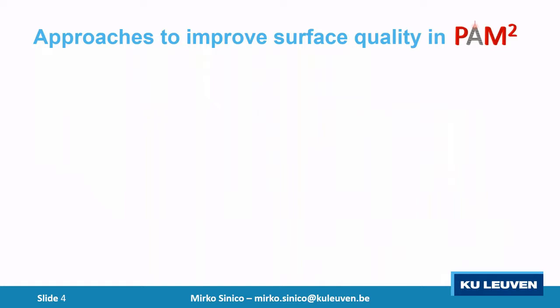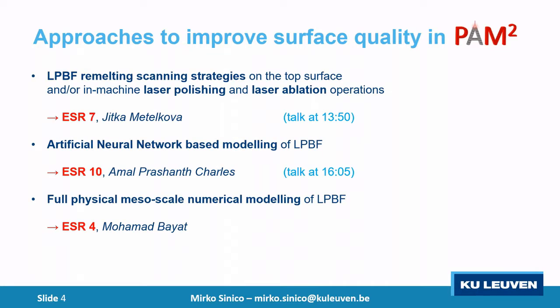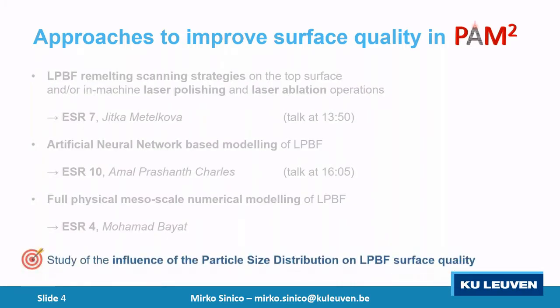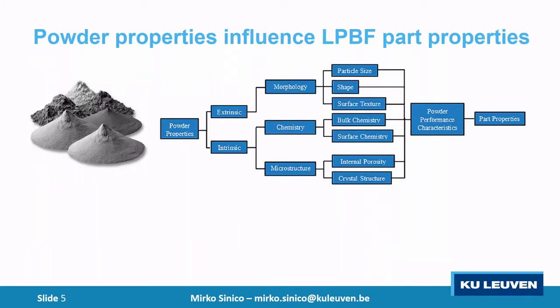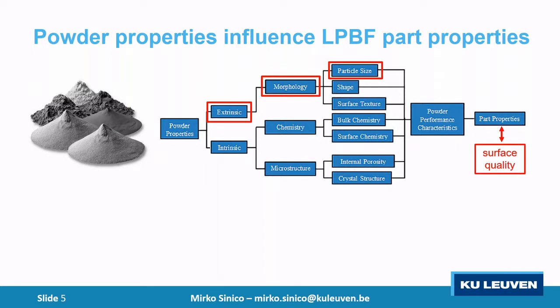The approach — this research question is approached by different ways in Palm Square, and some talks today also address surface roughness. In this case I will talk about the influence of particle size, so the powder properties, on the final surface quality. We focus on particle size as a morphological extrinsic property of the powder and connect it to surface quality.